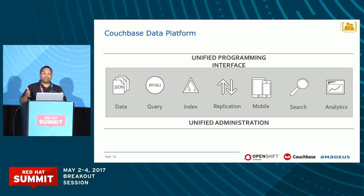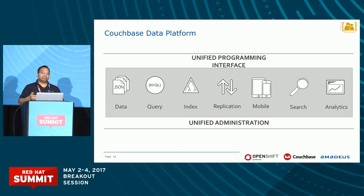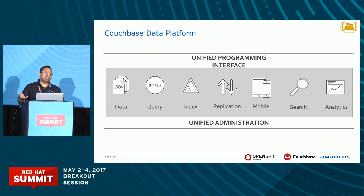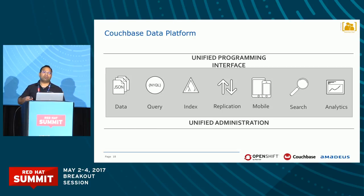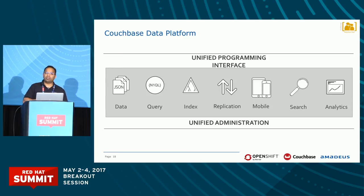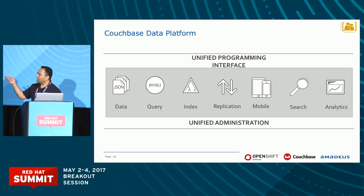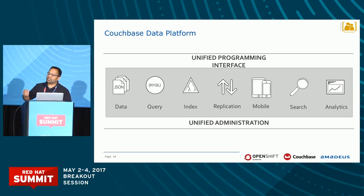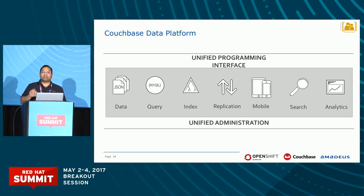Couchbase is a data platform — a single platform with all the different technologies. It is a distributed document data store that natively supports JSON documents. It can also be used as a KV store or as an in-memory database. We have a SQL-like query language which works on JSON documents — we use the power of SQL on JSON. We have a wide range of indexing capabilities, powerful replication within the cluster, across the cluster, and between edge devices. We have a lighter version of Couchbase that runs on mobile/edge devices with synchronization technology to replicate data back to the cluster. We are also adding full-text search and analytics capabilities.